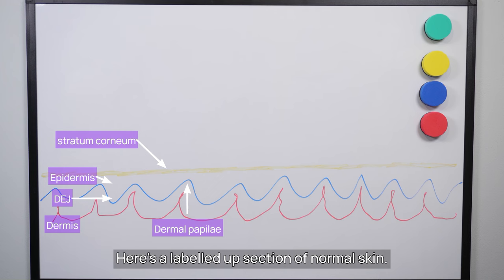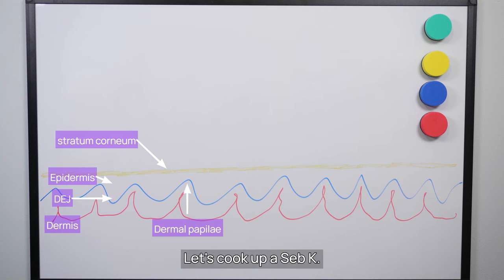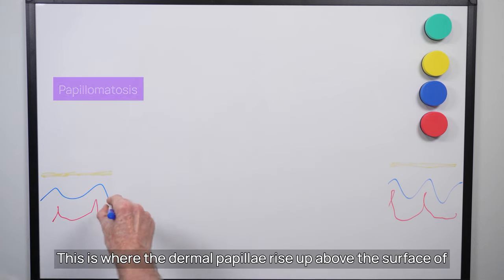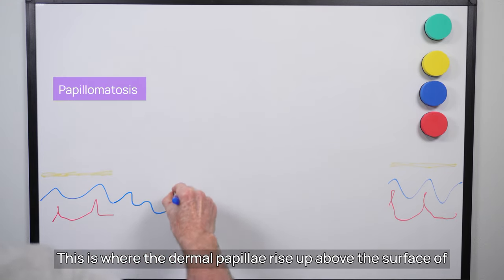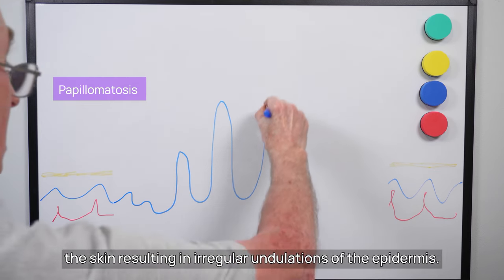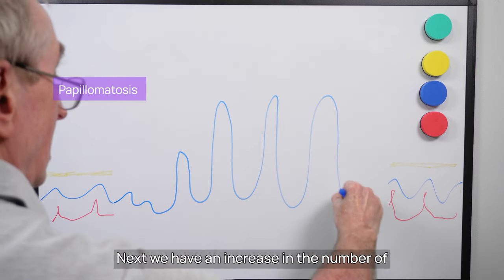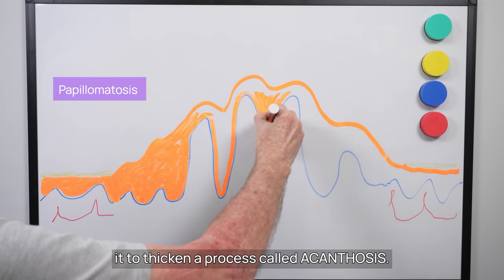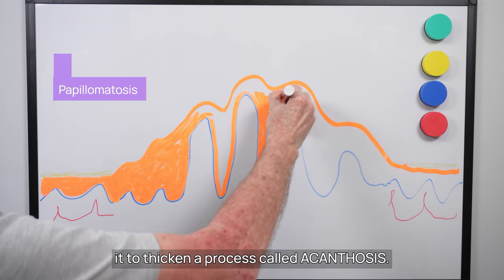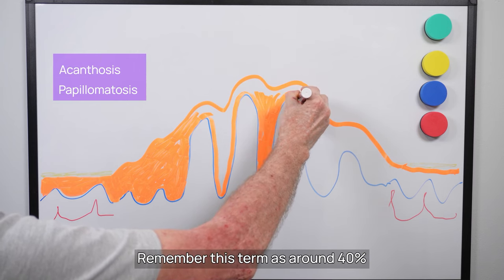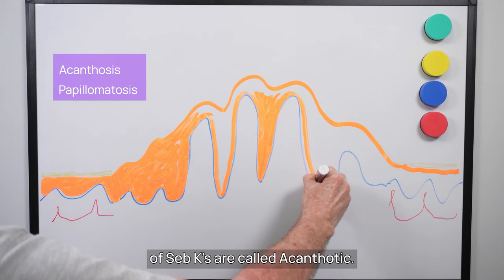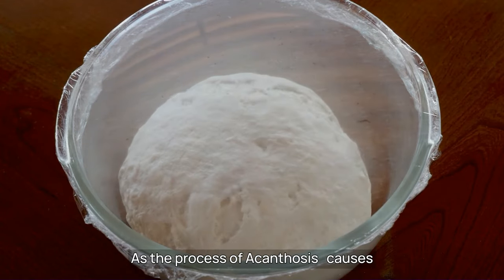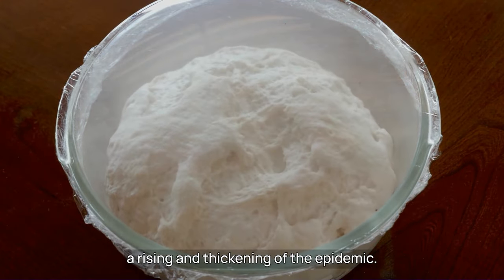Here's a labelled section of normal skin. Let's cook up a Seb K. First we need a little bit of papillomatosis — where the dermal papillae rise up above the surface of the skin, resulting in irregular undulations of the epidermis. Next we have an increase in the number of keratinocytes within the epidermis causing it to thicken, a process called acanthosis. Remember this term as around 40% of Seb Ks are called acanthotic. The process of acanthosis causes a rising and thickening of the epidermis.